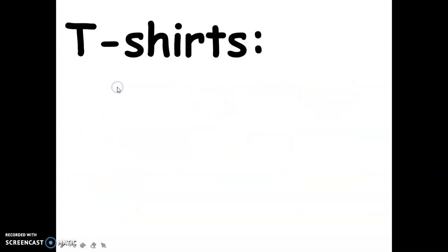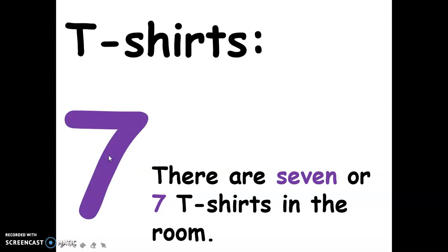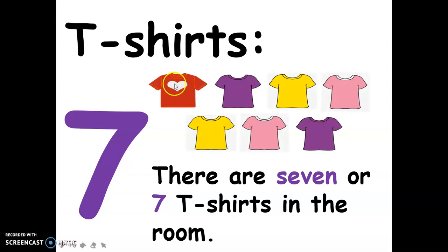Next, for the t-shirts — there are seven t-shirts in the room. This is the spelling of seven, and this is the numerical symbol for seven. And these are the seven t-shirts: one, two, three, four, five, six, seven.